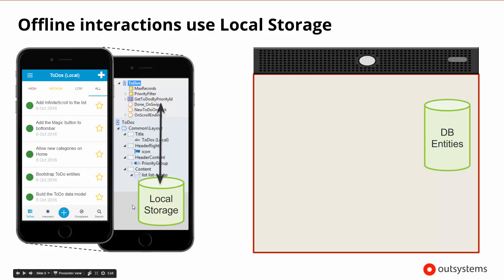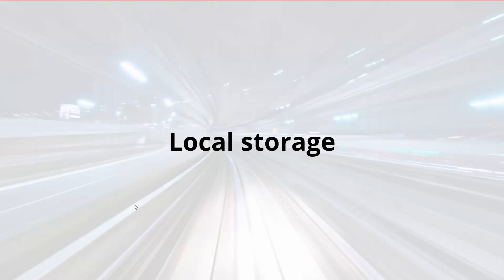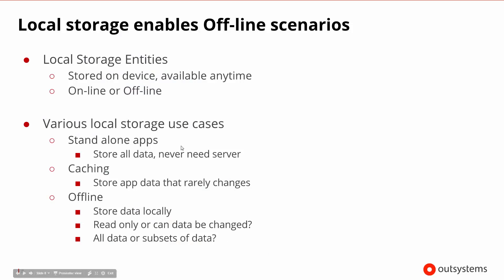The difference here is the regular interaction stores things in the database on the server, and here we'd be storing things locally on the device. In a number of cases the storage can be different, but it's usually something like SQLite. When we talk about local storage, we have the capability of creating local storage entities, and those are the entities that are going to enable our offline scenarios. They are stored on the device, so we have the capability of fetching them anytime — it doesn't matter if we're online or offline.